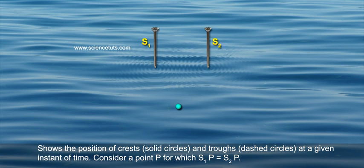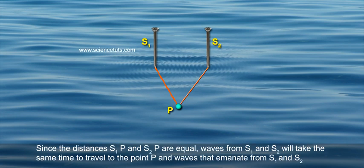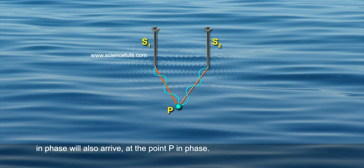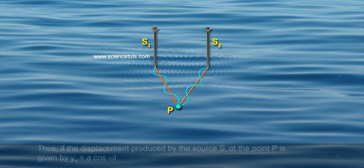Consider a point P for which S1P equals S2P. Since the distances S1P and S2P are equal, waves from S1 and S2 will take the same time to travel to the point P, and waves that emanate from S1 and S2 in phase will also arrive at the point P in phase.